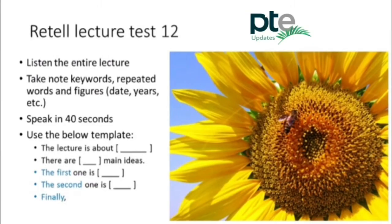Why do bumblebees pick some flowers over others? Researchers have known for a while that a flower's color can be a signal — color is shorthand that says to a bee, 'I've got some good quality nectar here, why don't you stop by for a visit?' But new findings show that bees also use color to get clues about a flower's temperature. According to a study from a British research team published in the journal Nature, some like it hot.